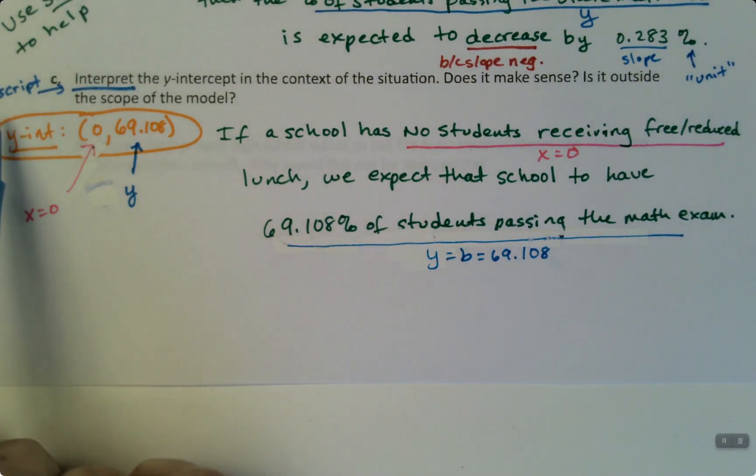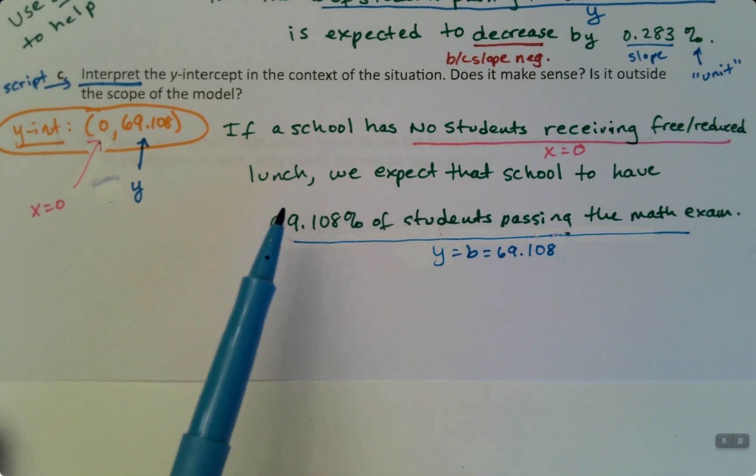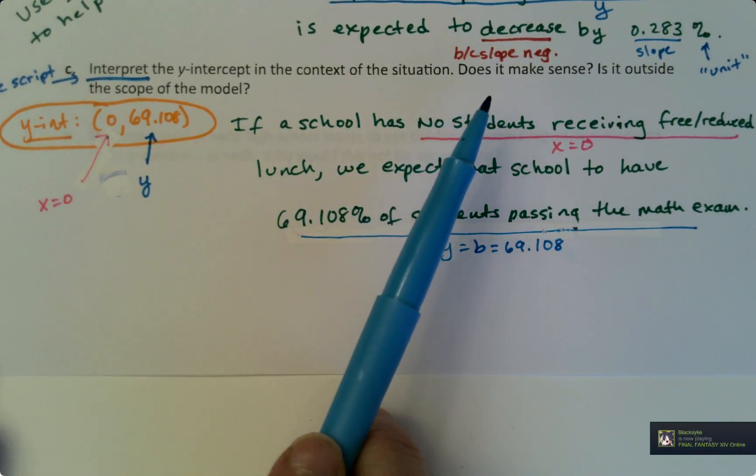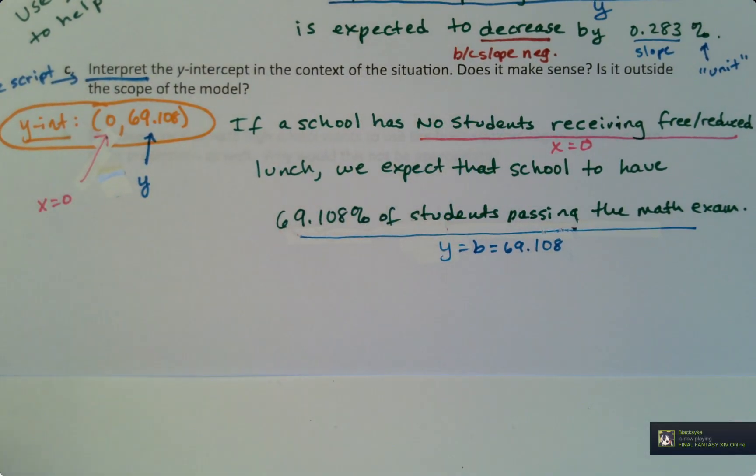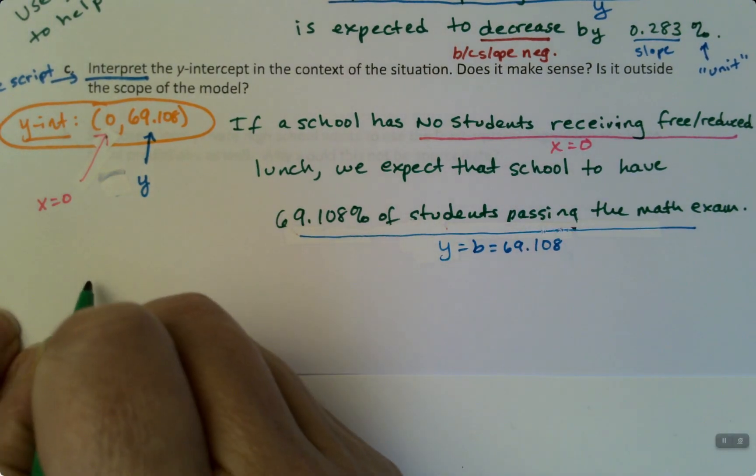Now I asked for an interpretation, so we did that. And then I asked to explain whether or not it makes sense, which it does not. So this does not make sense based on the context of the situation.